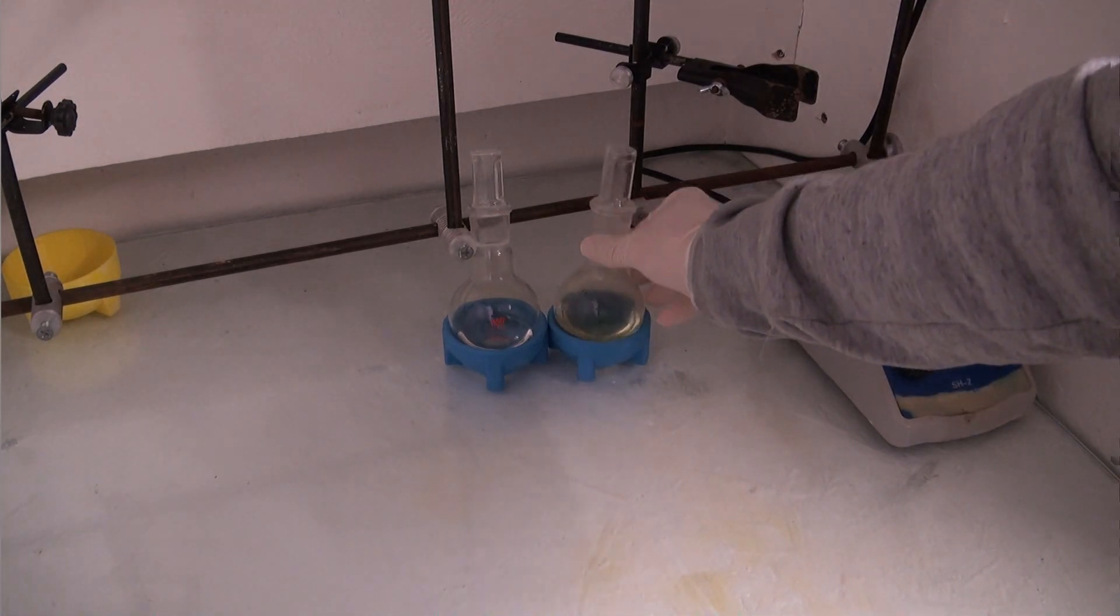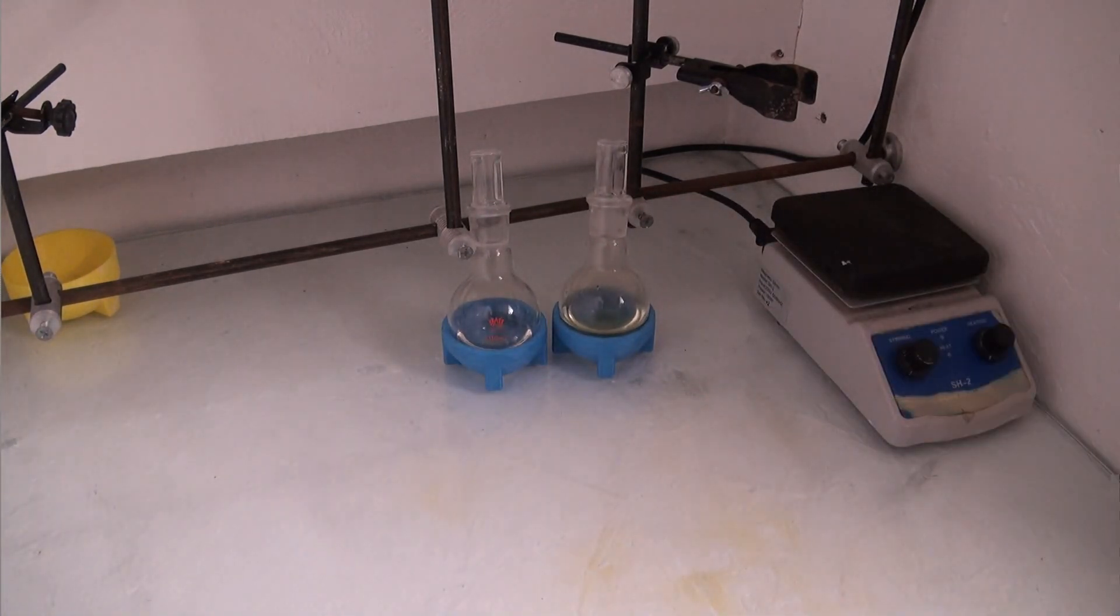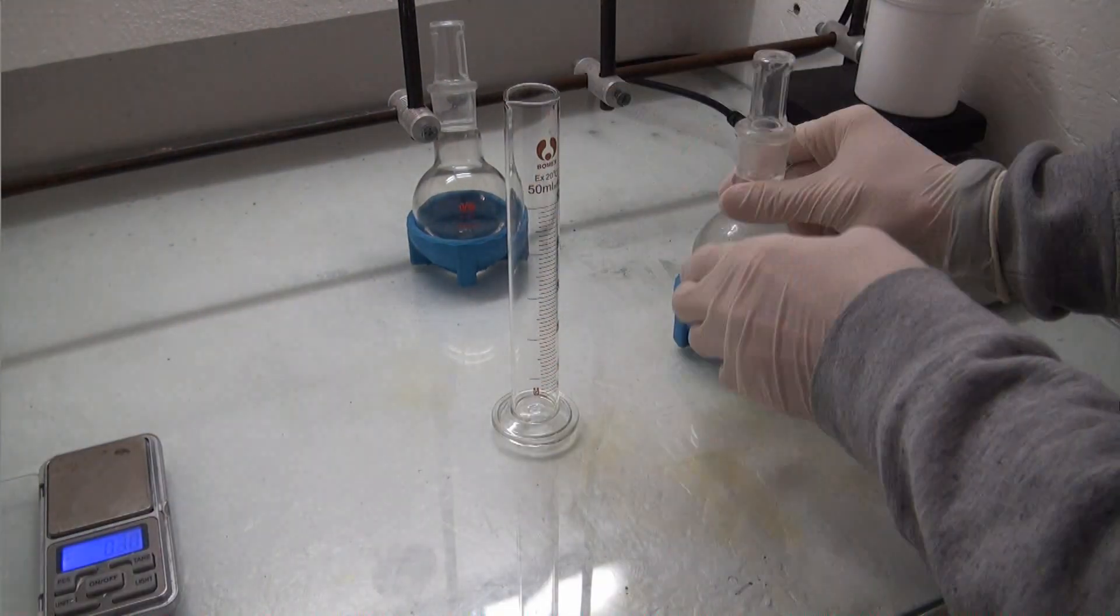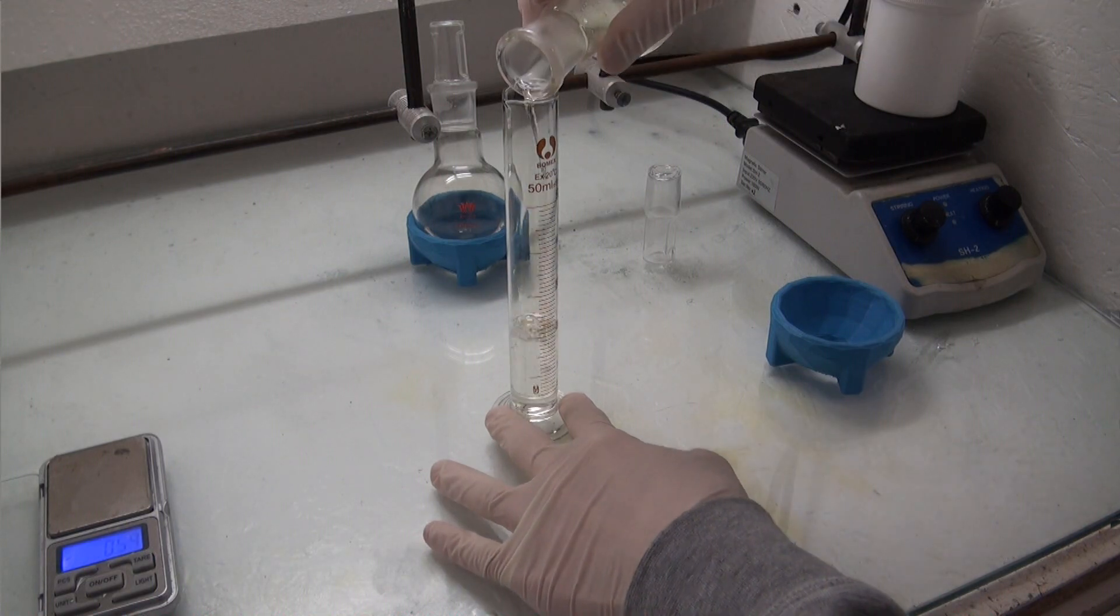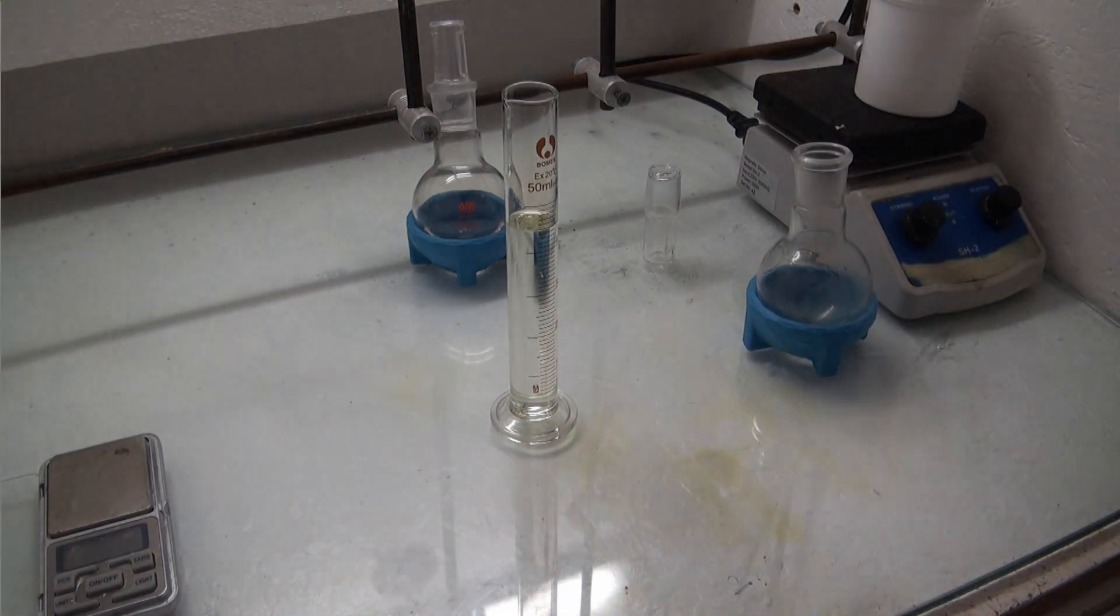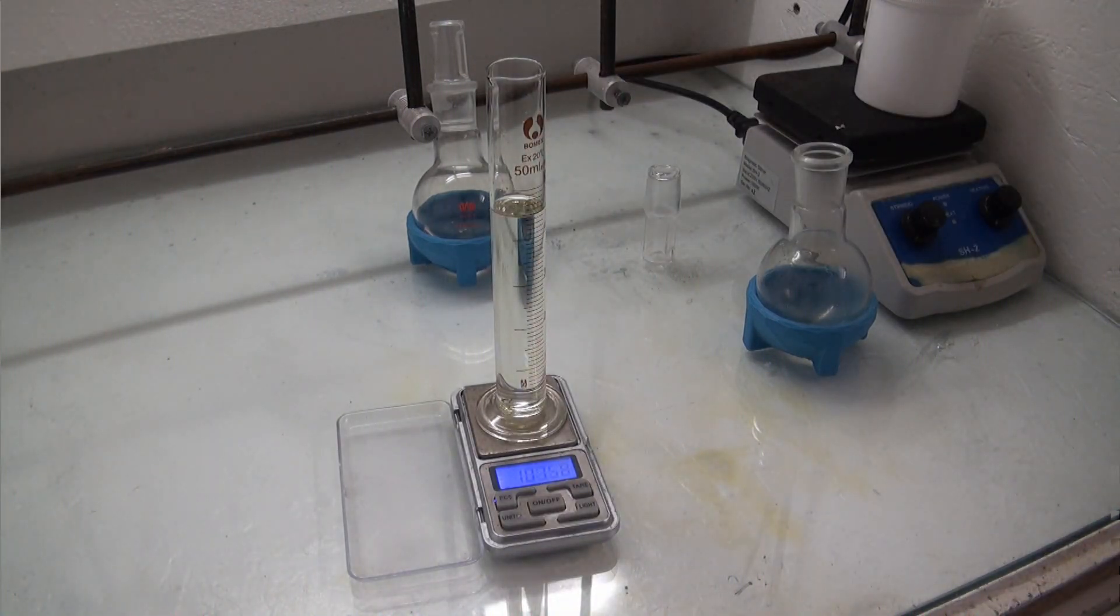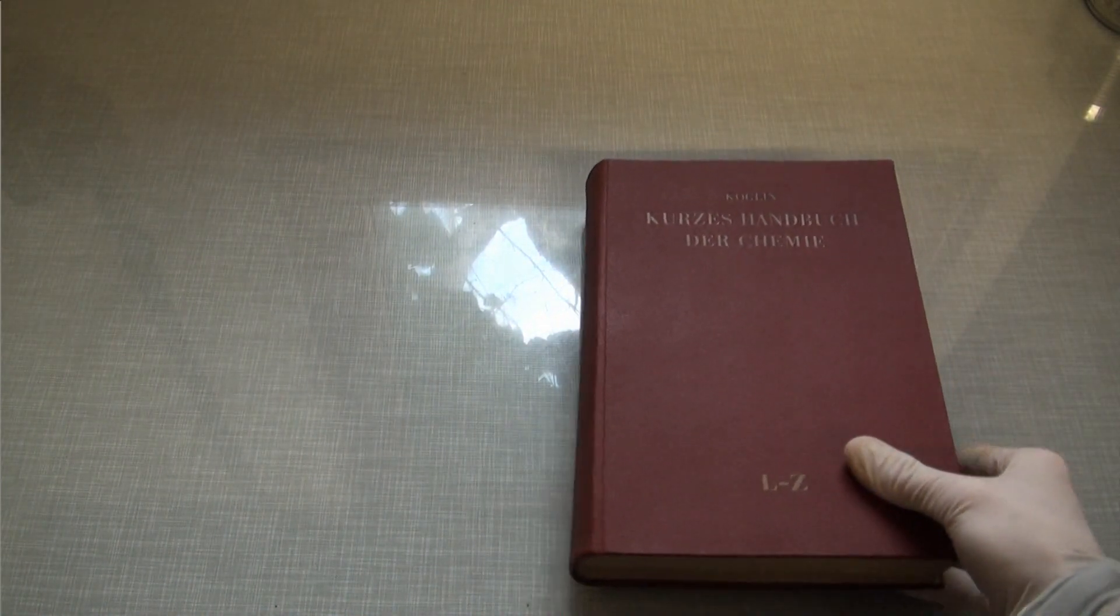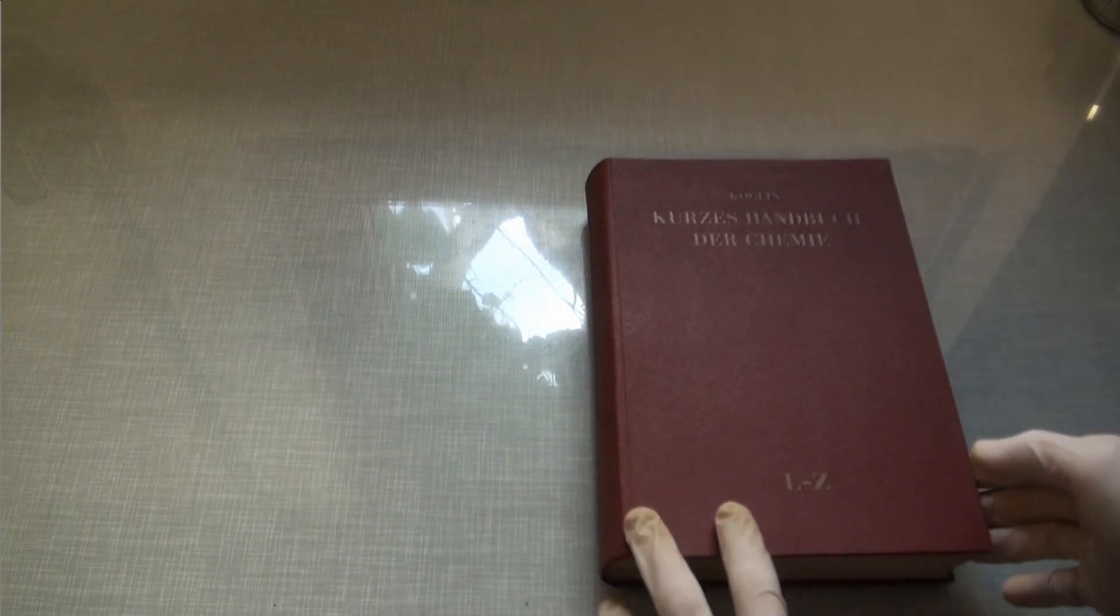But anyway, to find out which one of those reactions was better, I needed to calculate the yield. I measured the weight and the volume of both acids, which gave me the density. From this, I was able to find out the concentration using this book. It is called a handbook of chemistry and contains a lot of useful data.